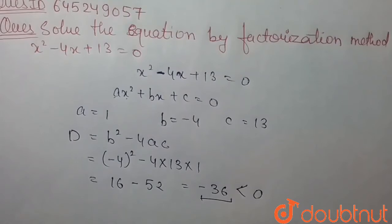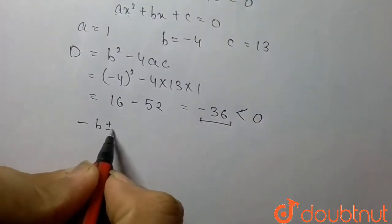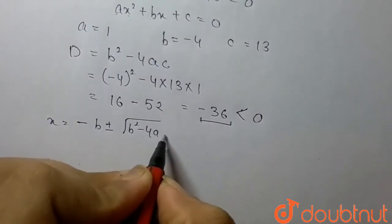So the given equation has the complex root. So we can solve this equation by the formula minus b plus minus under root b squared minus 4ac upon 2a.